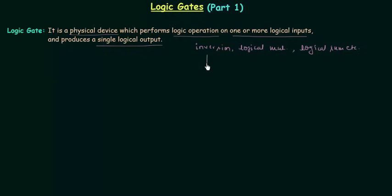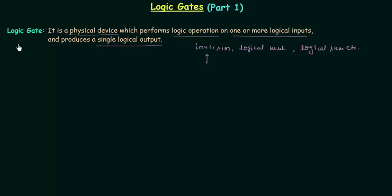For example, in inversion we have only one input, and in logical multiplication we can have two or more inputs. In logic gates we can have one or more logical inputs and it produces a single logical output. Now we will categorize logic gates into three groups.